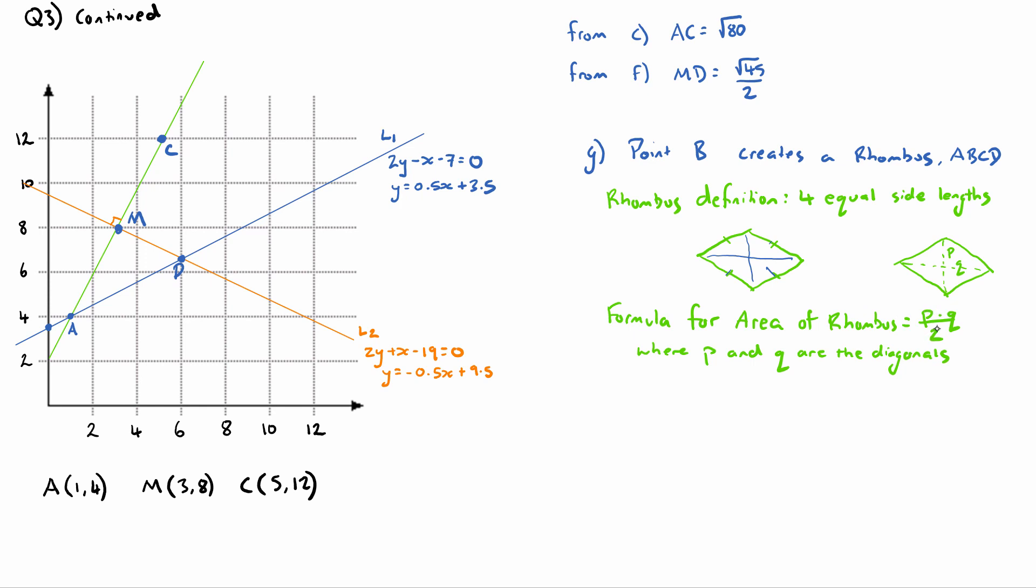Now let's look at our diagram. I'm going to draw some dotted lines between these points. Point B would be somewhere out here - we're not asked for the coordinates, just the area - but it's going to be somewhere out here to form this rhombus shape.